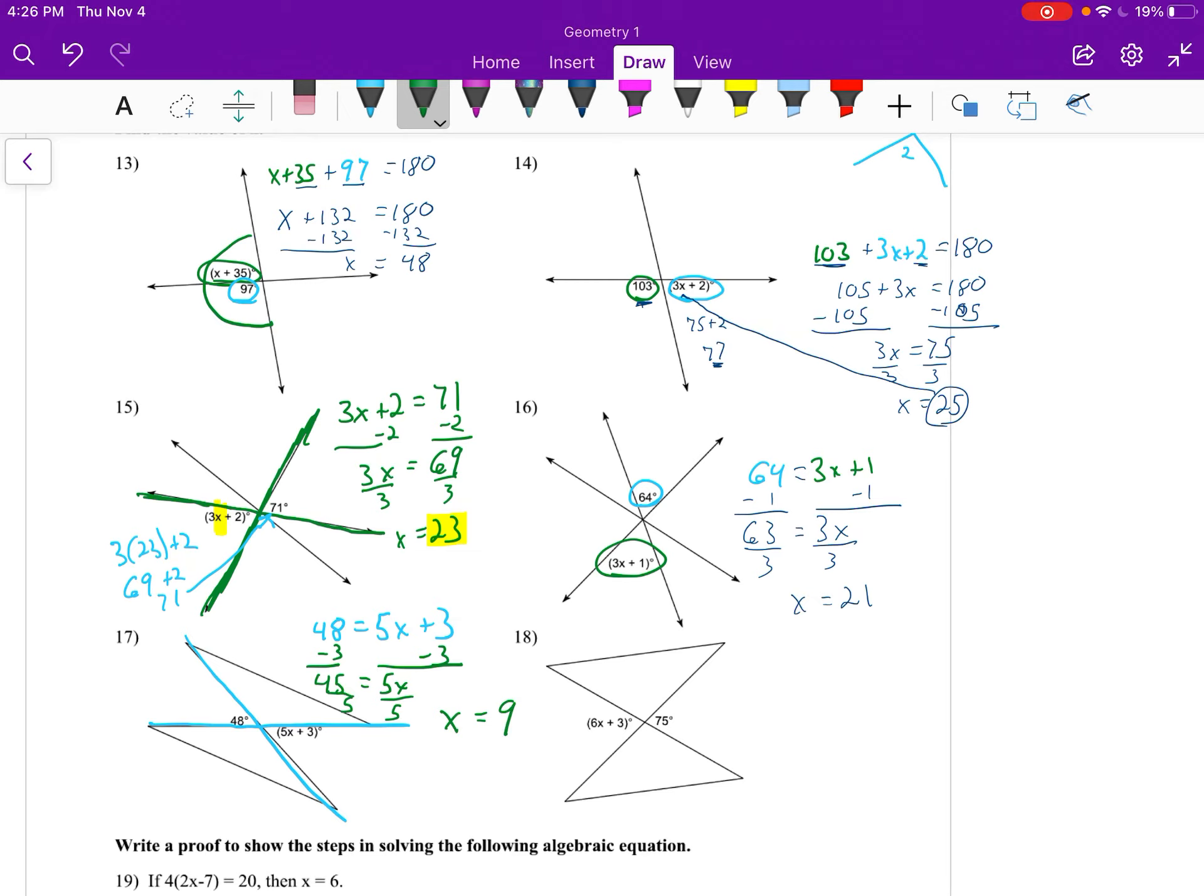And the last one from this section, once again it's vertical angles. So 6x plus 3 equals 75, subtract 3 from both sides, 6x equals 72, divide both sides by 6, x equals 12, because 72 divided by 6 is 12.